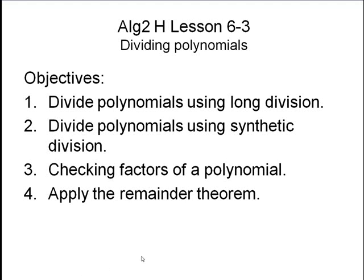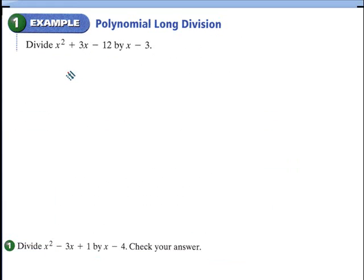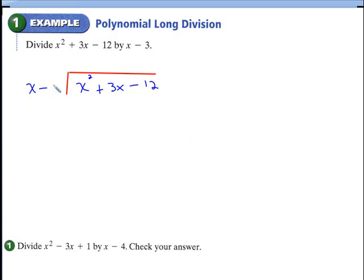Algebra 2 Honors, Lesson 6-3. Here are the lesson objectives. We need to take this polynomial and divide it by this polynomial, so let's set up long division. We have x squared plus 3x minus 12 and we're dividing it by x minus 3.